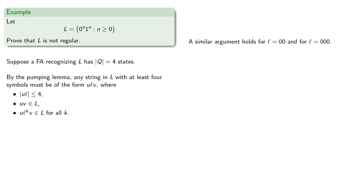And a similar argument holds if our middle is 0, 00, or 000. And a similar argument holds for all other possibilities of ul.